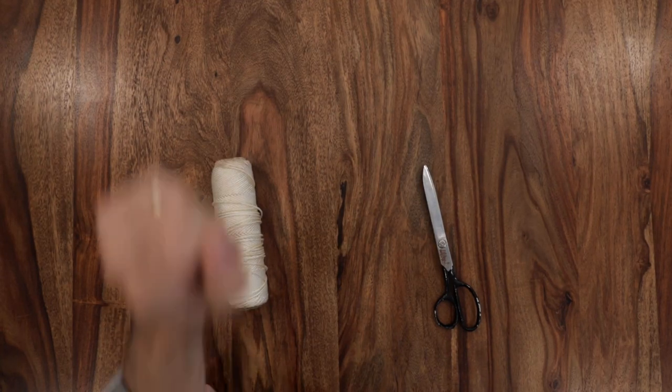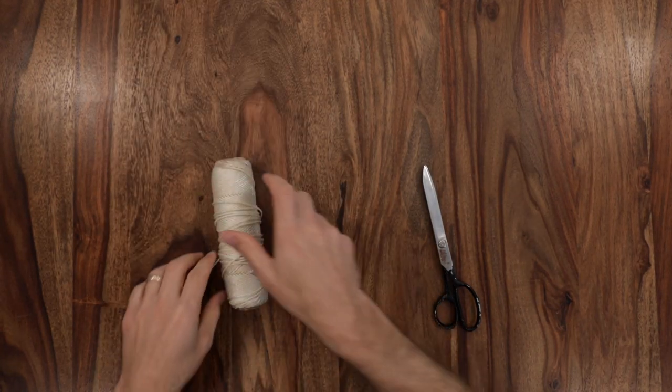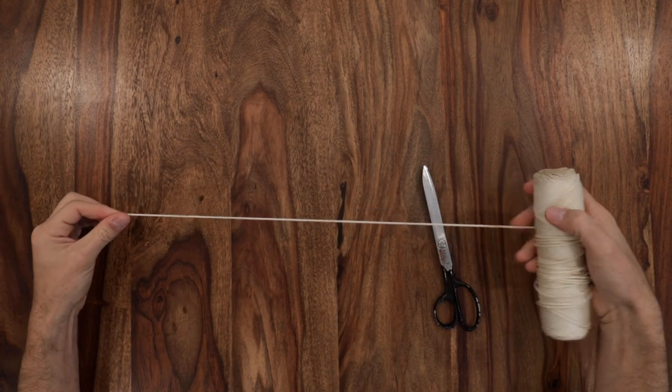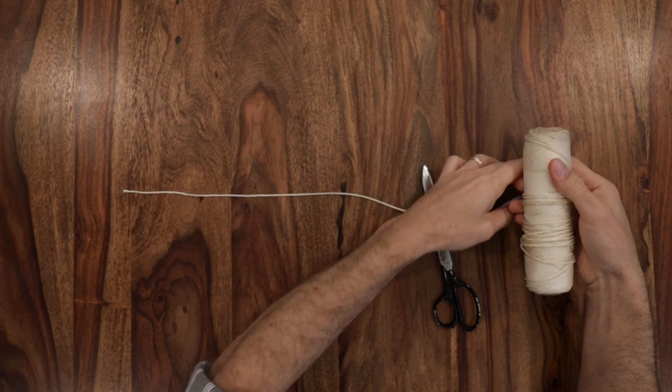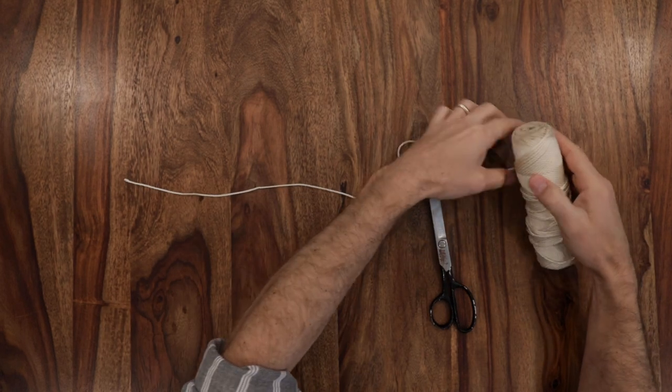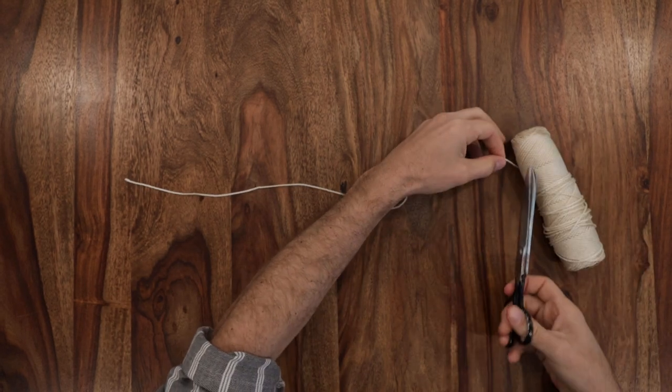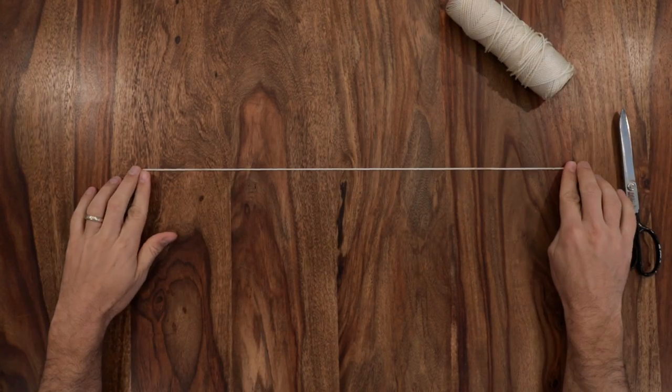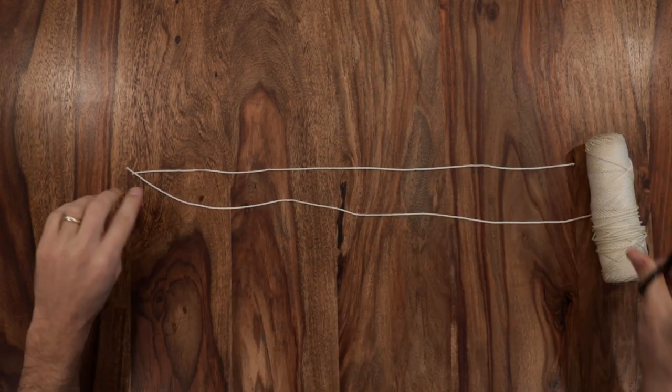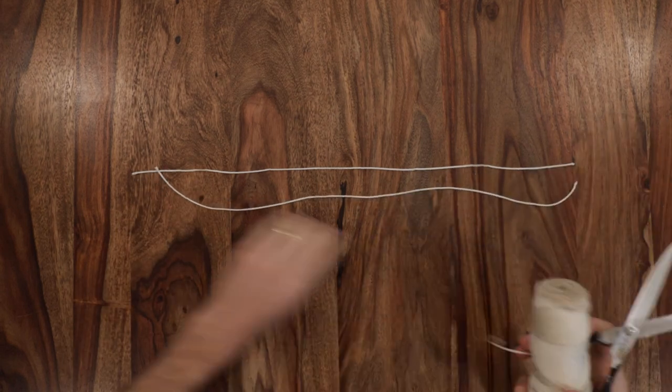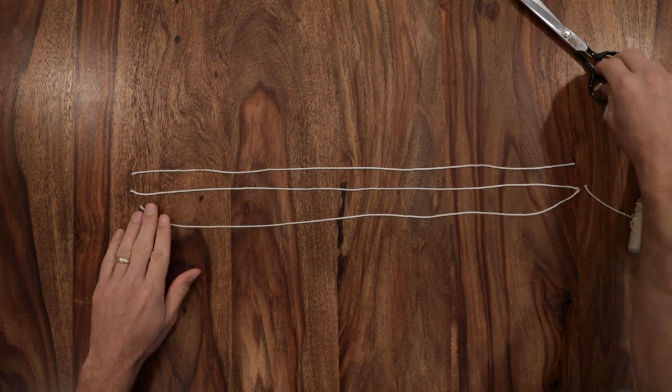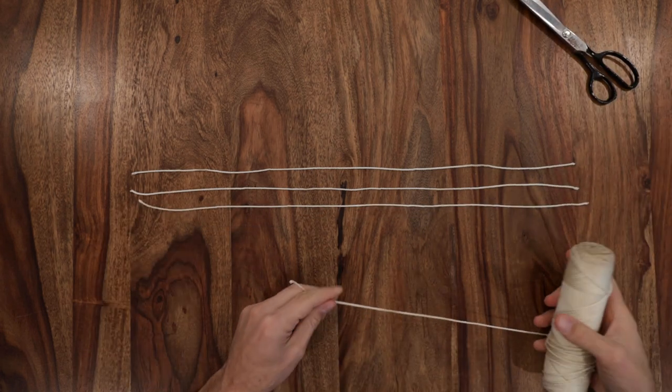Okay, so you're going to start with string and scissors and you're going to cut three pieces of string. The length depends on how low you need to go, maybe two feet roughly. So you cut a piece of string and then you cut two more to match it, just like that. They should all be the same length.